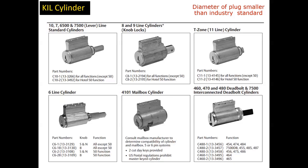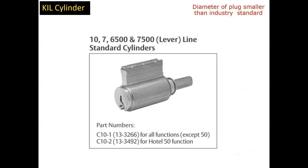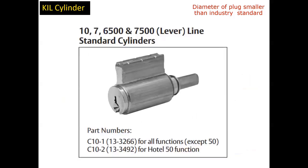Quite often these cylinders use some of the same parts, and what might be different is the tailpiece between the 10 line and 11 line. The catalog number shown on the bottom left — for example for a 10 line, if you see 10-1, that's your finish and keying details. The number in parentheses is an older part number still used, yet we convert it over to the catalog number, which is C10-1.